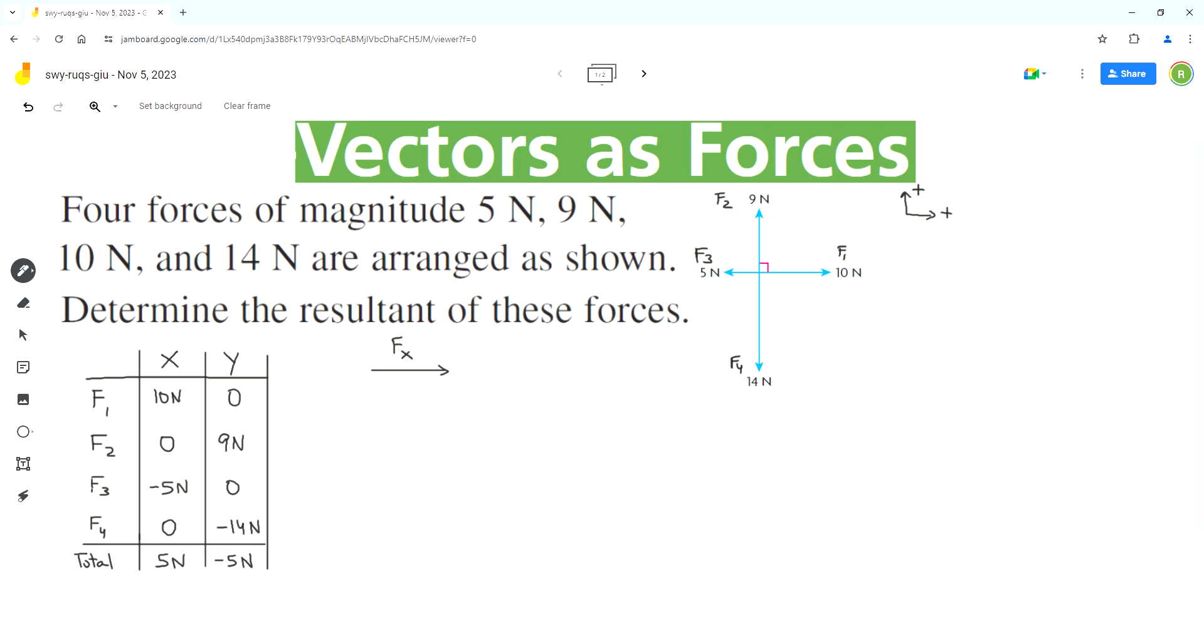Fy is negative so we'll draw it in the downward direction. The tail of Fy will be at the tip or the head of Fx.